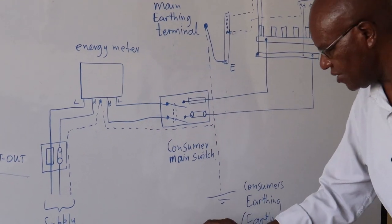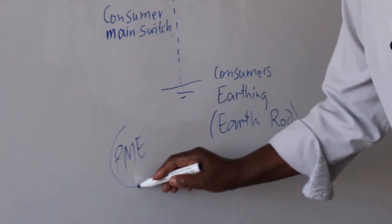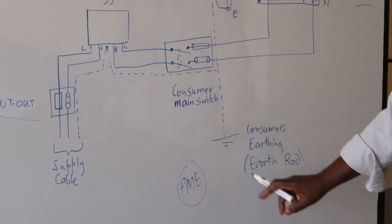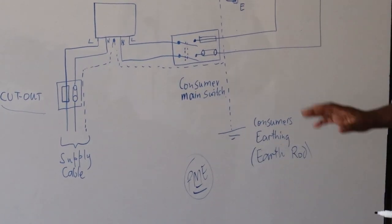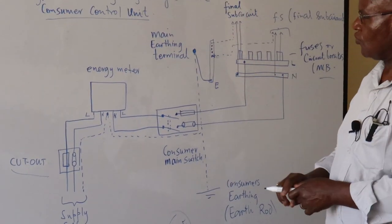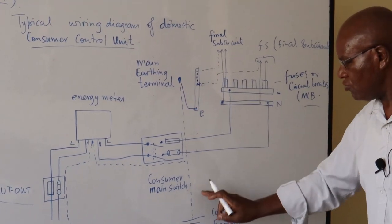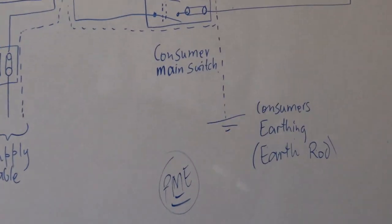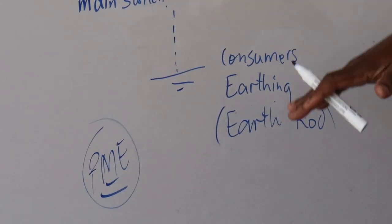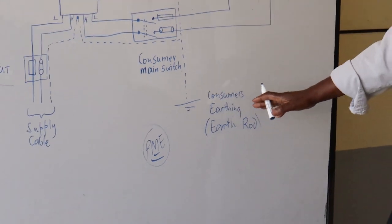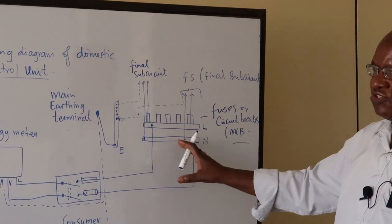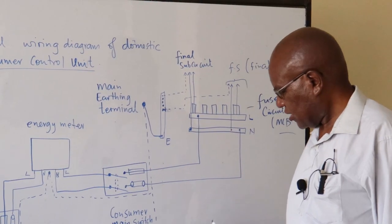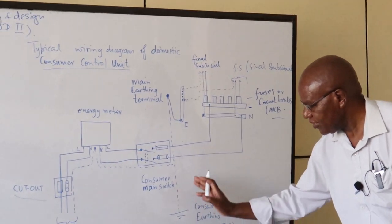In what we call the PME system, the power supply earthing terminal will be connected to the consumer's earthing terminal. Otherwise, in the consumer's installation, you must have what you call a main earthing terminal, and from there you connect a cable to an earthing rod which is hammered into the ground. The length and how deep it should go — you need to take some measurements. When you finish your installation, you need to do some testing, and the testing will determine the length of rodding required.